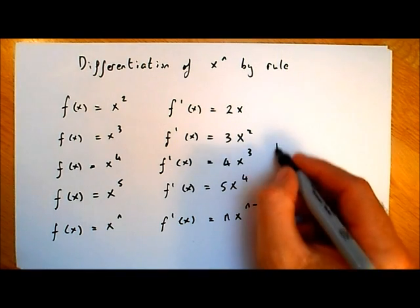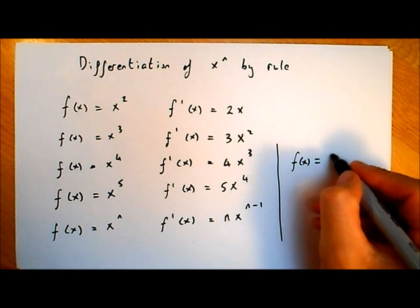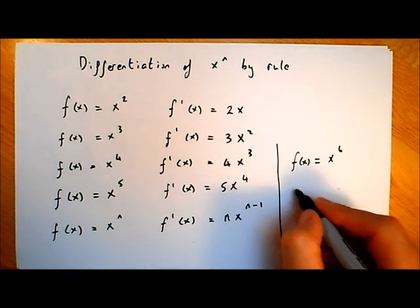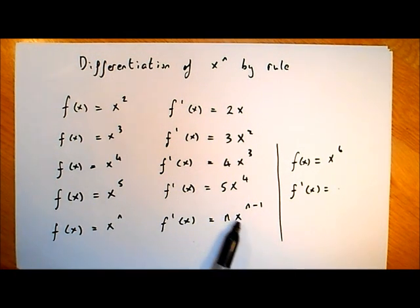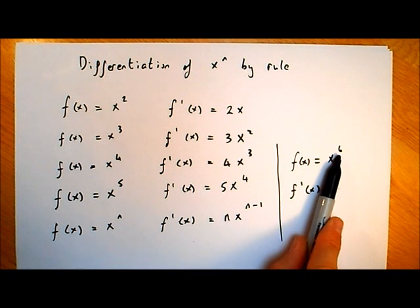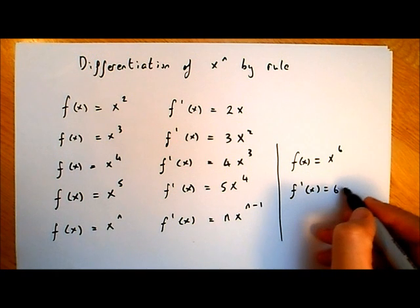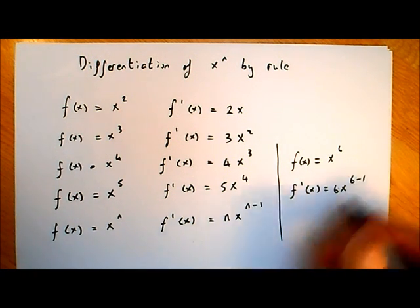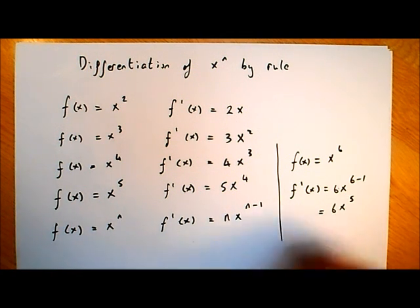Let's look at an example. Say we have f of x equal to x to the power of 6 and we want to find f dash of x. Well, if f of x is equal to x to the power of n, f dash of x will equal n multiplied by x to the power of n minus 1. In this case the n value is 6, so f dash of x will be 6 times x to the power of 6 minus 1, which is 6x to the power of 5.